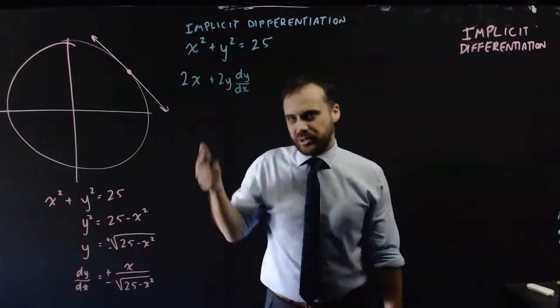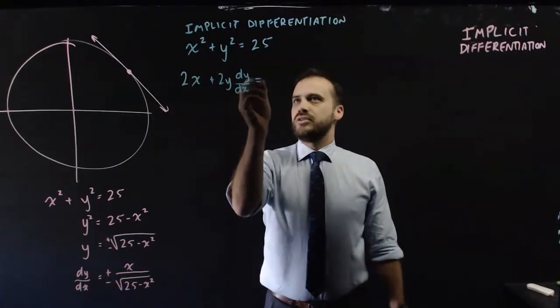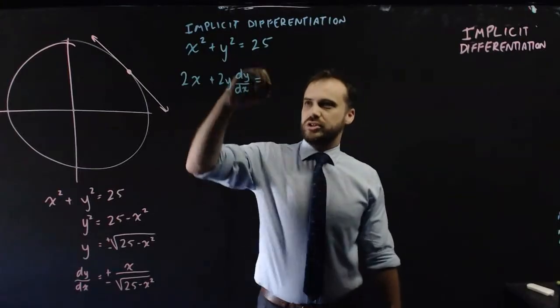Now this is the new bit and I'll explain it in a minute. This term, differentiate it. The derivative of a constant term is 0.